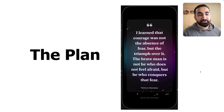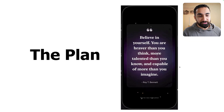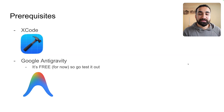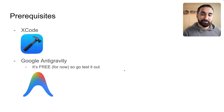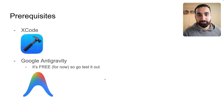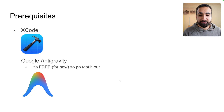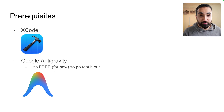Here is the plan to build a beautiful motivation and daily affirmation app. The prerequisites are two things: you need Xcode and you want to be on a Mac. If you don't have a Mac, you won't be able to download Xcode, and we need Xcode because we want to build an iOS application. The second thing you need is Google Antigravity — this is where we're going to be prompting with AI to build the entire application. It's totally free, at least for now, so go and test it out.